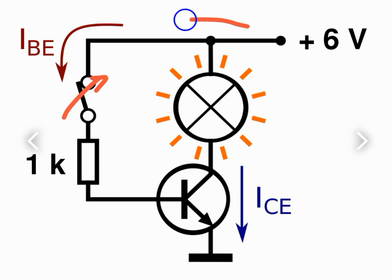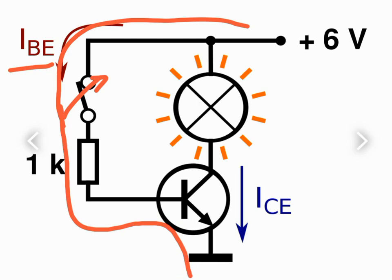The circuit is now completed. The current called IBE flows through the resistor and through the input side of the transistor. You can also apply Kirchhoff's voltage law to the input side of the transistor.